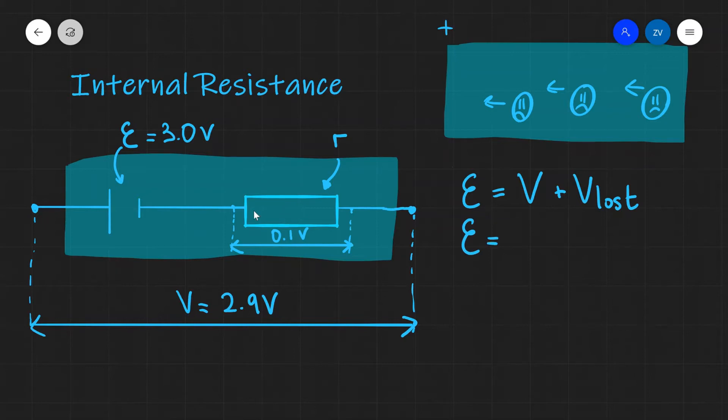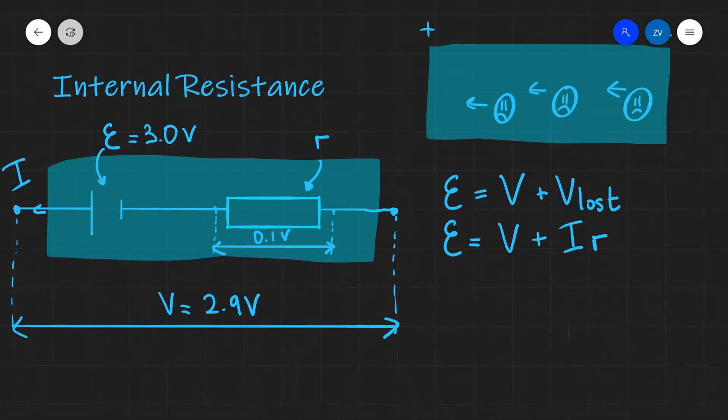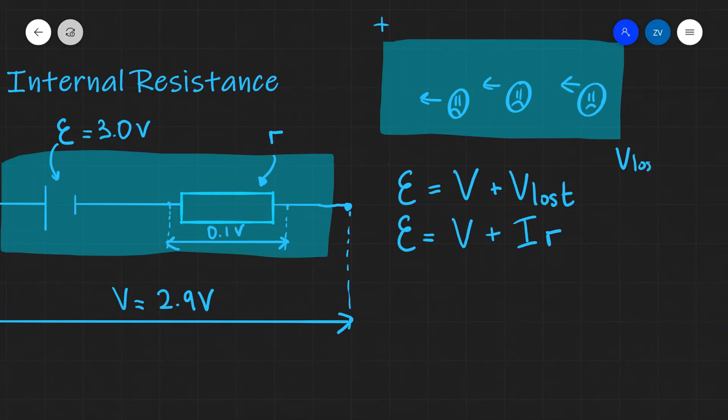We can also simplify this and say that the EMF will equal the terminal PD plus I, which is the current in the circuit, times r, the internal resistance. This is because we can apply Ohm's law to the lost volts as well. V_lost equals I times r.